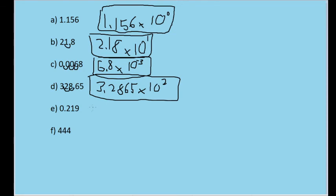For 0.219, the decimal place only moves one space to the right, with its order of magnitude moving back down once to cancel it out. So this number in scientific notation is 2.19 times 10 to the power of negative 1.